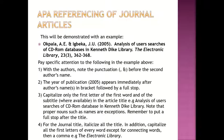Upper referencing of journal articles will be demonstrated with the following example on the screen. Pay specific attention to the following in the examples. With the authors, note the punctuation. If you have more than two authors, you may use a comma. But if you have two authors, you use AND. Note the punctuation before the second author's name.